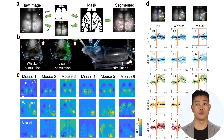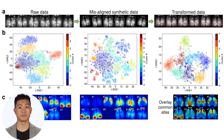We used sensory mapping to validate expected delimited cortical regions. To perform sensory mapping, we applied visual, whisker, and tail stimulations on mice to generate activation maps for the respective sensory modalities. The predicted sensory regions from MISONET were consistent with sensory functional maps.